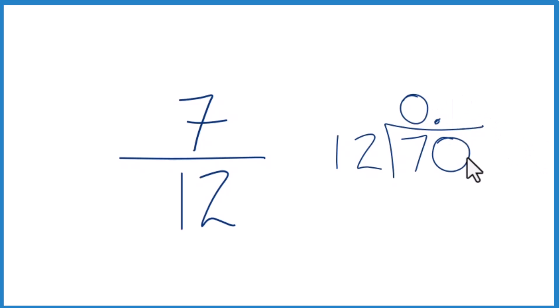6 times 12 would be 72—that's too much. How about 5 times 12? 5 times 12 is 60. So we subtract and get 10 left over.